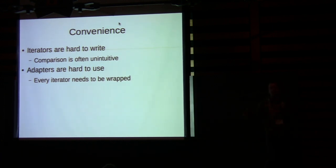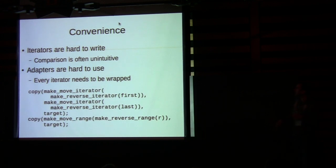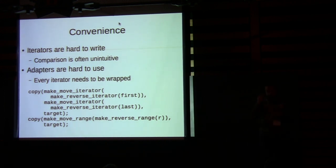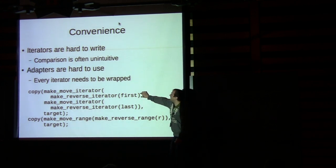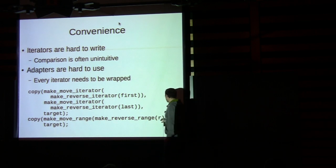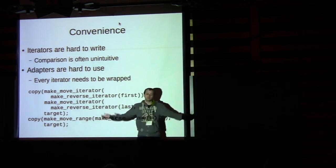Iterator adapters are also hard to use. Who here has used the Boost iterator library? With filter iterators it's even more annoying — you have to wrap both a begin and an end iterator separately. If you have a range, it's one call: you've got one range, you wrap it, and you wrap that. Done.